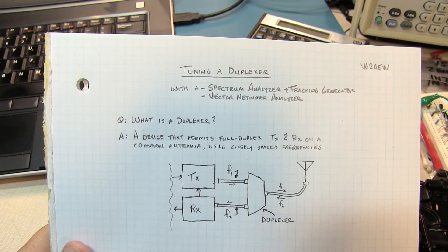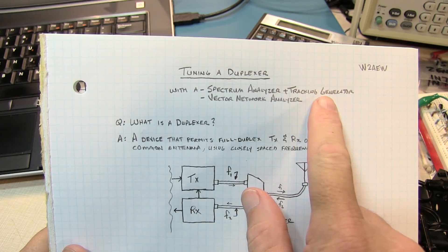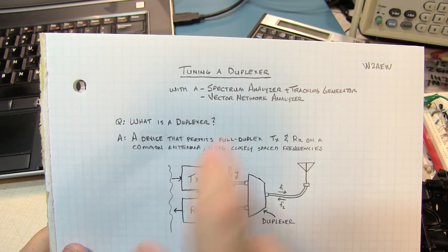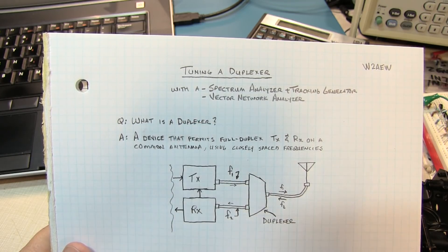In today's video we're going to talk about tuning a simple antenna duplexer with a spectrum analyzer and tracking generator, as well as tuning it with a VNA or vector network analyzer. But first let's talk about what a duplexer is.